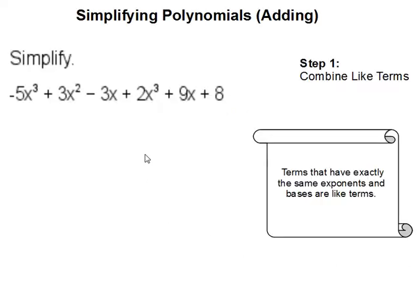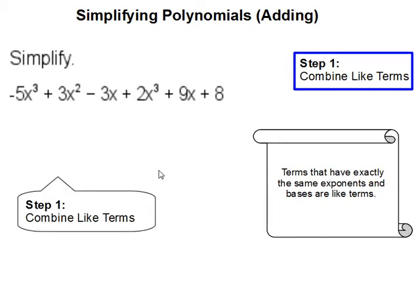Simplifying polynomials by adding. Step 1: Combine like terms. We are to combine the like terms of all the terms given here.